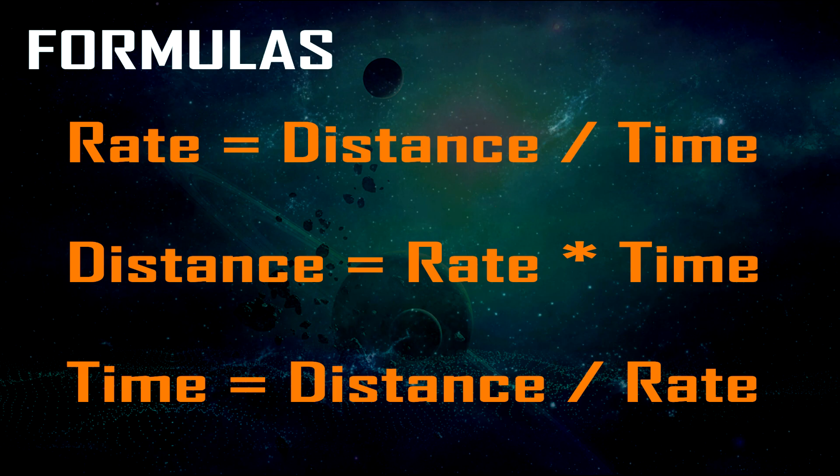Let's talk about these formulas. It's actually really just one formula and we just relocate where each variable is inside of it. We can use this to track the rate, or how fast something is moving — to get that you divide the distance by how long it took. To get the actual distance you multiply the speed by how long it took. And to get the time you divide the distance by the rate. I'm going to show quick examples of all three.